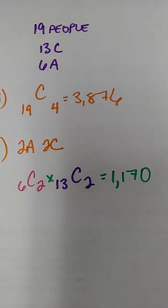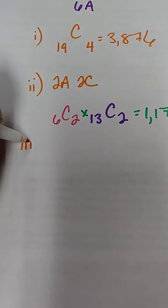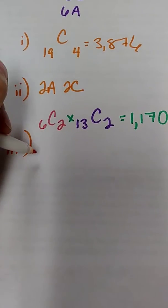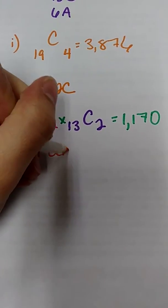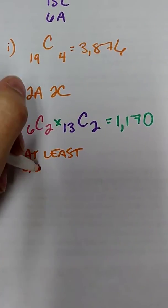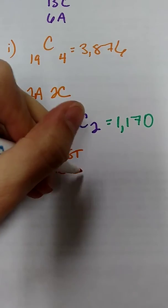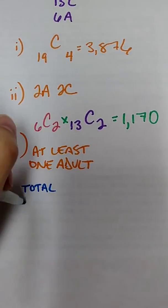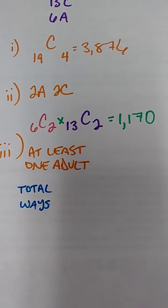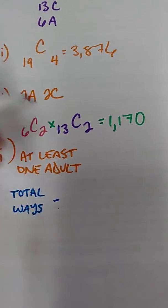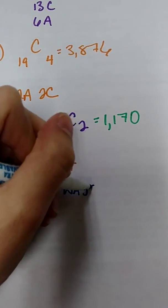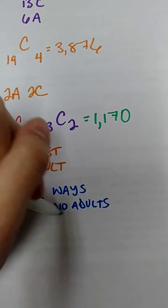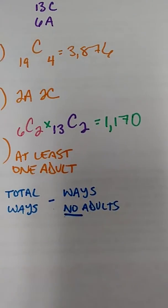Now for the third part of this question, it's asking us how many ways are there to select this committee if there must be at least one adult. In order to do this, we have to find the total ways that we can do this with no restrictions. We have to subtract the ways in which there are no adults. Because we don't care about any of the ways that there are no adults because we want at least one adult in our final answer.